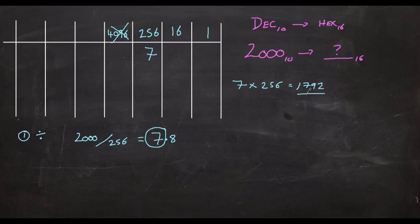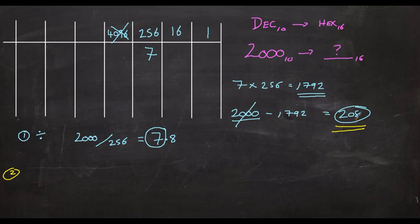How much really is seven lots of 256? How much of our 2000 have we actually accounted for by putting a seven there? Seven lots of 256 is equal to 1792. So by putting that seven there, we've accounted for this much of our 2000. But what's left? To find a difference, you do subtraction. Our original number take away what we've managed to represent. 2000 take away 1792 is 208. So now we need to account for 208 in the other columns.